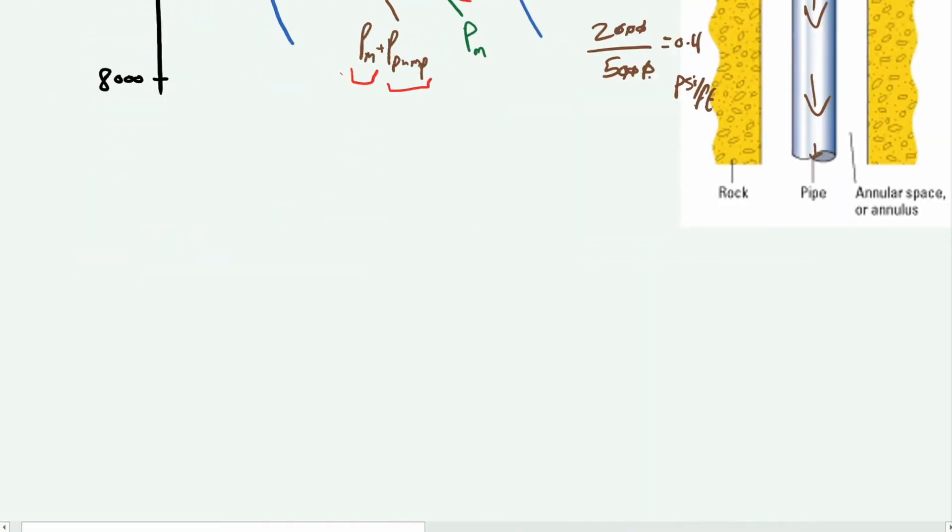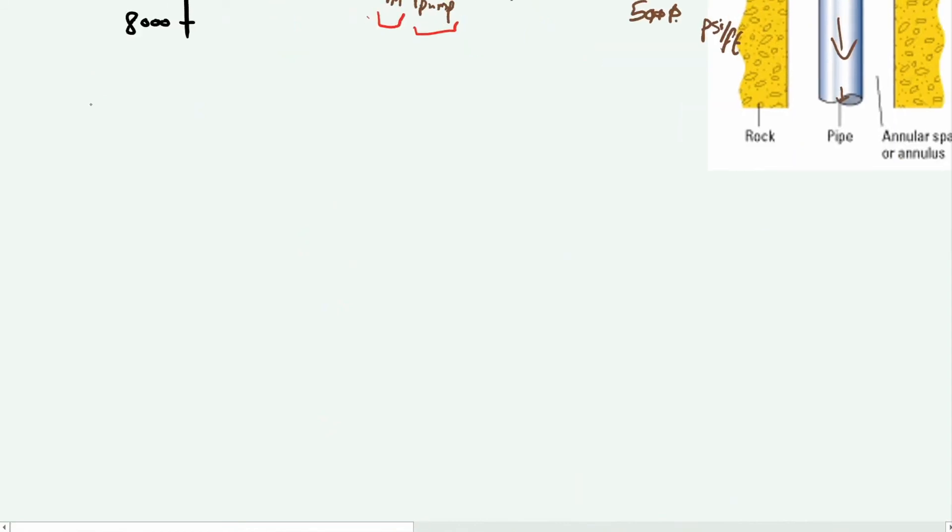So we know now that we have our mud gradient and it's equal to 0.4 psi per foot. We need to get this from psi per foot to pounds per gallon, and there are two ways to go about this. There's the easy way but not the most thought-provoking way, and there's the hard way which is better. Let's start with the easy way.